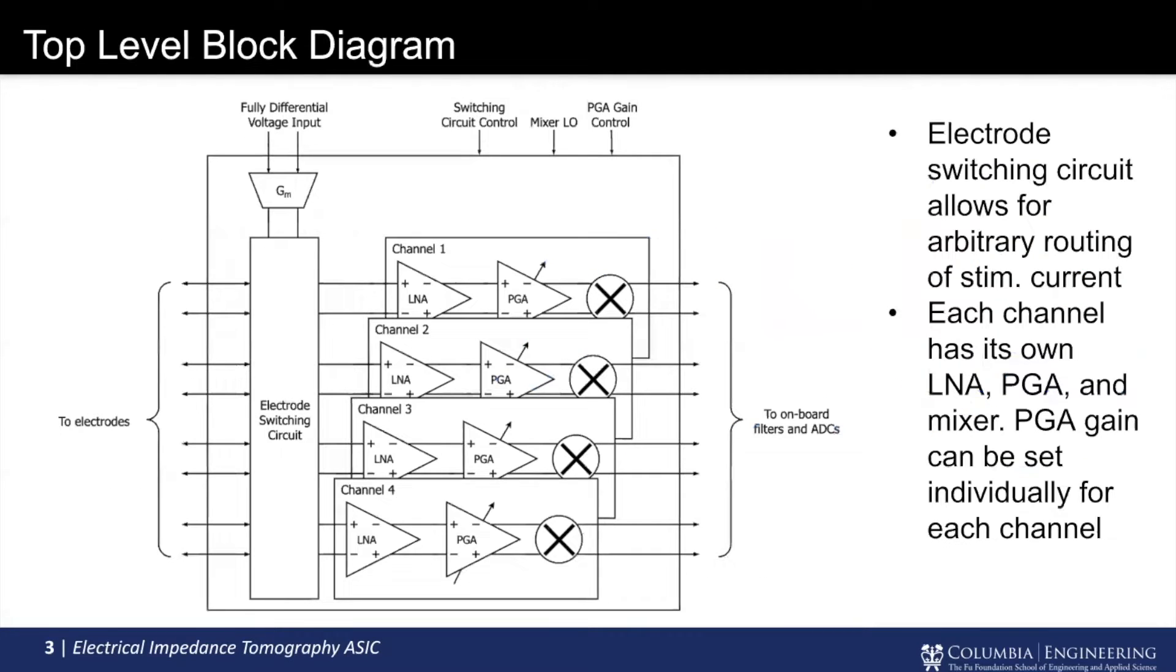So this is the top-level block diagram of our chip. In the top left-hand corner, we have the current stimulator, which is routed through the electrode switching circuit, which allows us, as was seen on the slide before, to arbitrarily stimulate on any one of the eight electrodes that go off from the chip.